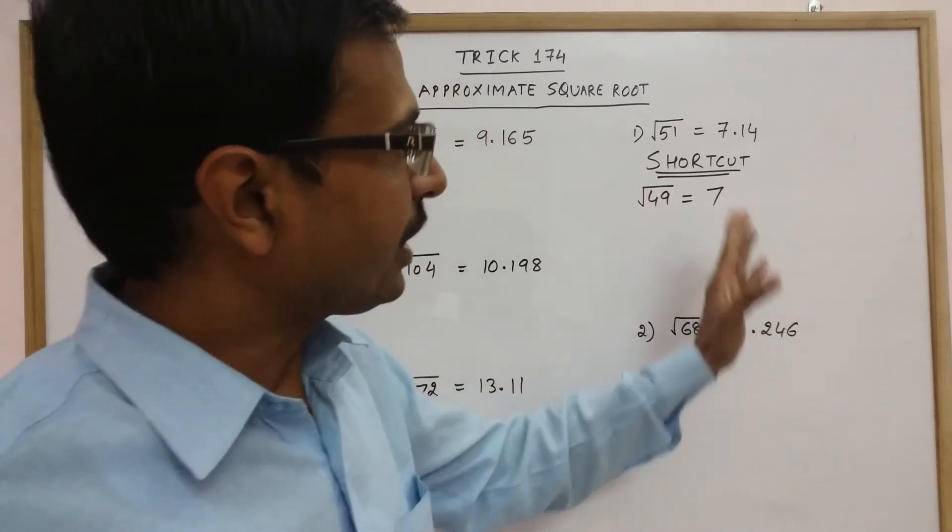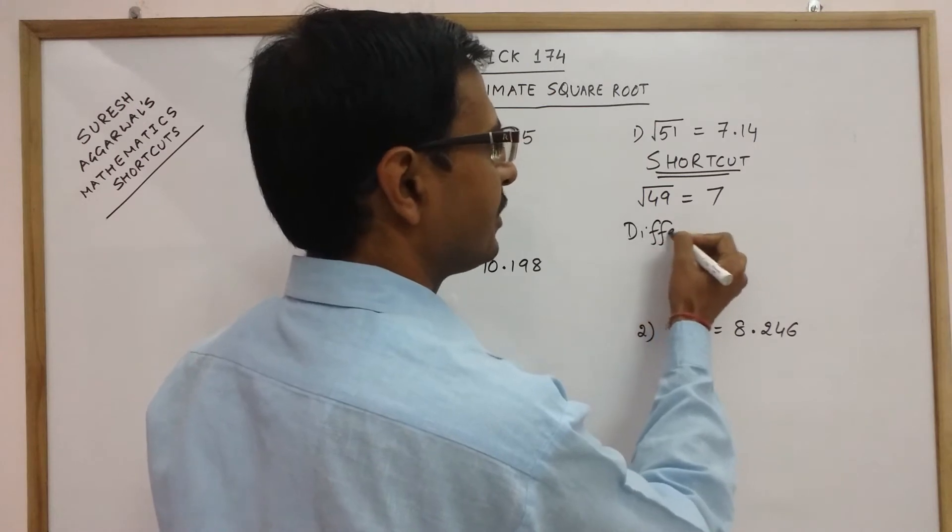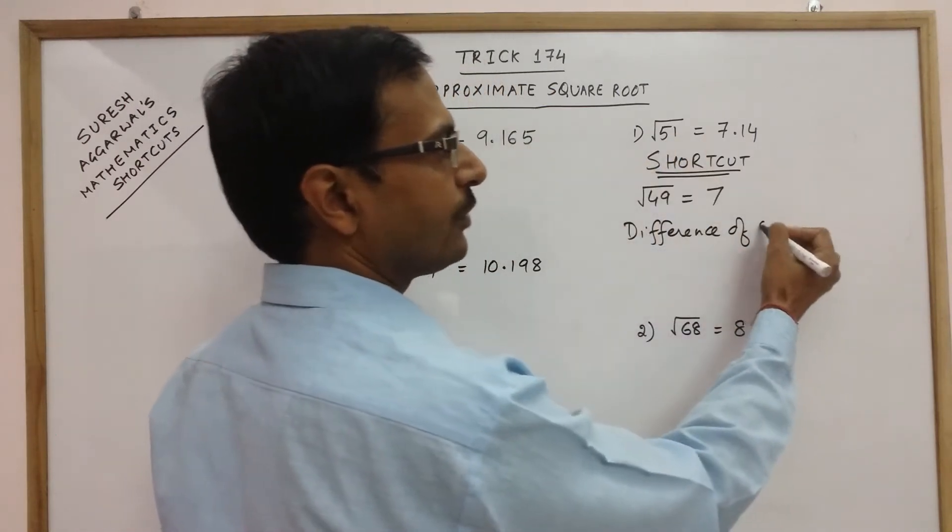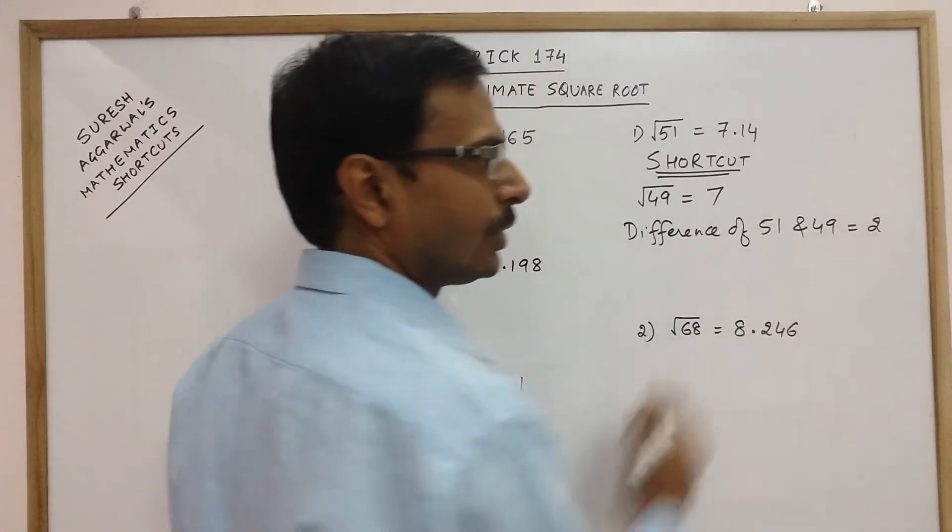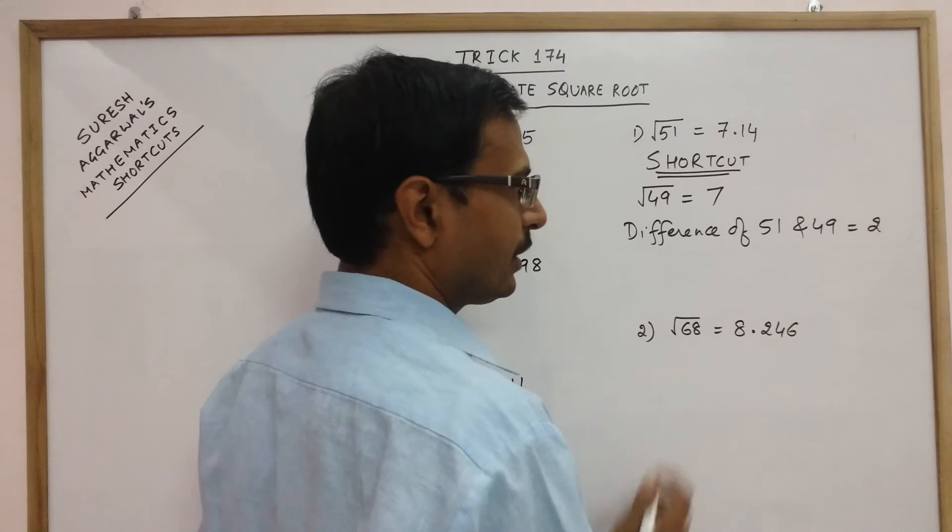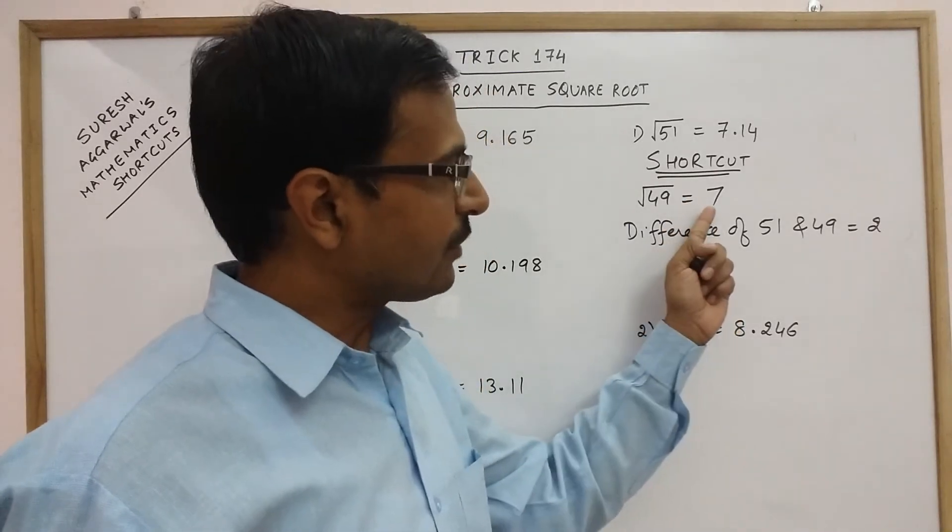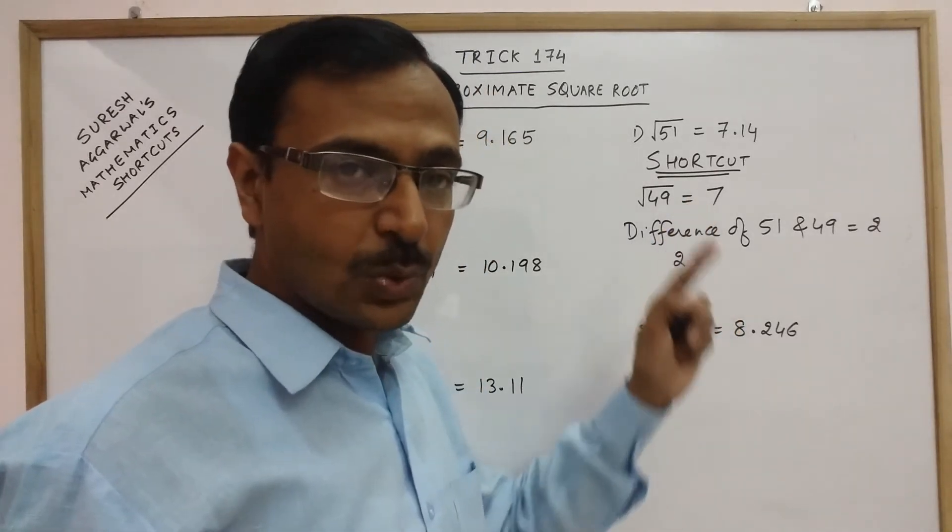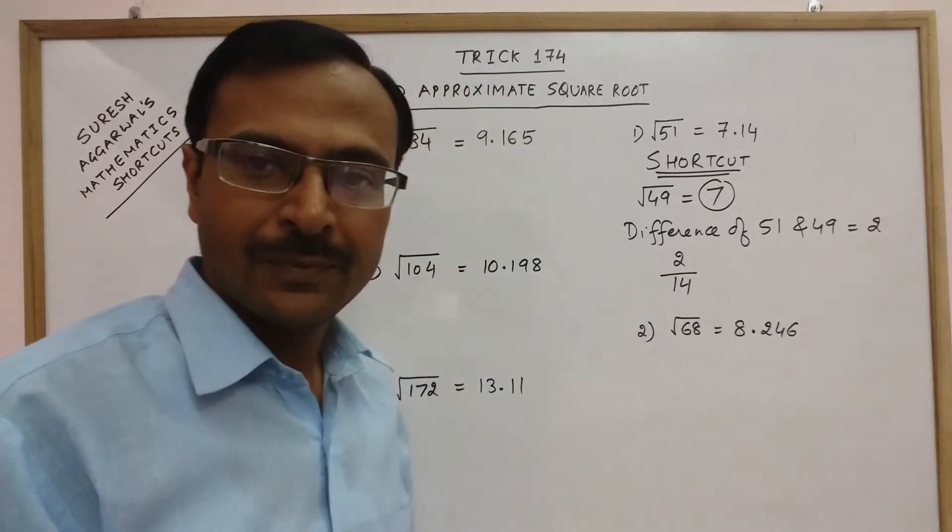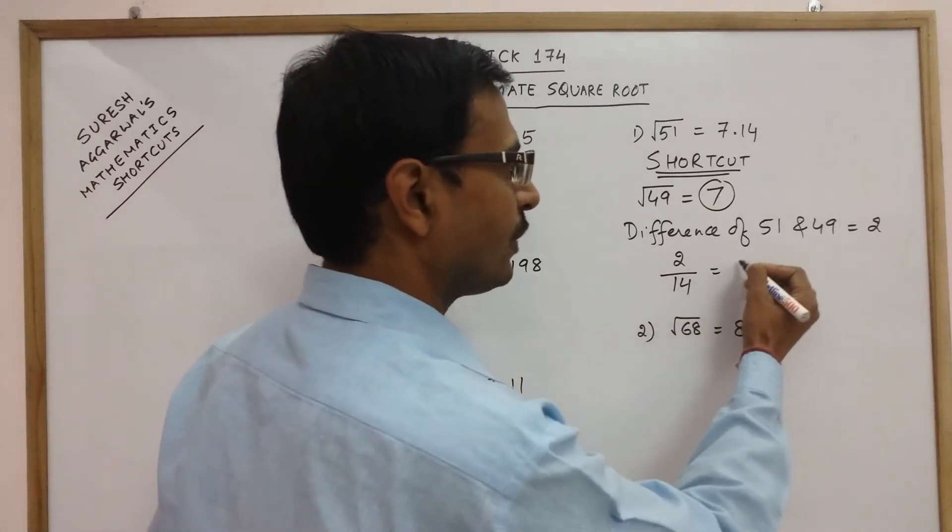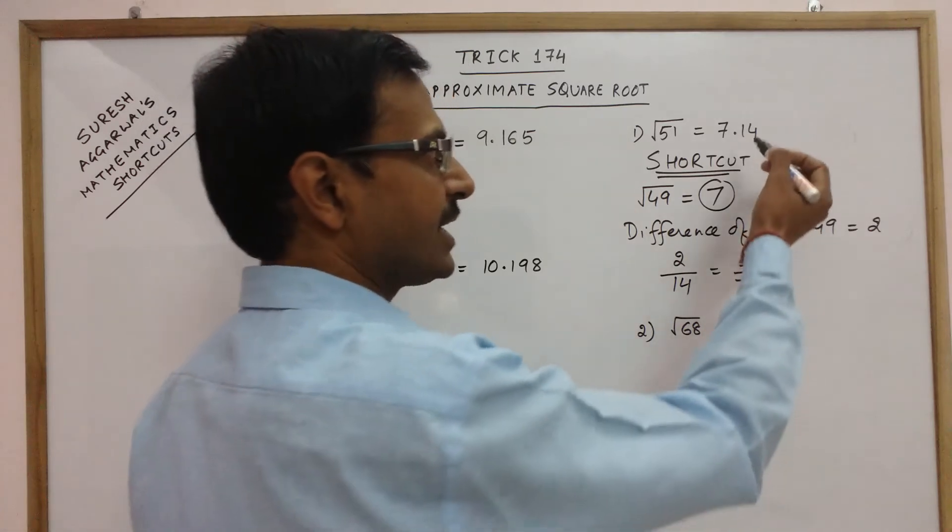Now come to the part after decimal. Just see the difference of this number in the square root 51 and this number in the square root 49. The difference is 2. So what you do is for the second part just write 2 this difference. And the first part which we have obtained is 7. So just double this part you will get 14. So now you have a fraction 2 upon 14 which can be reduced to 1 upon 7. And now if you divide 1 by 7 you may get the second part of our answer.